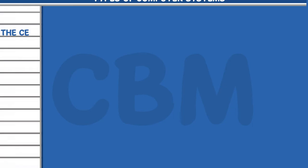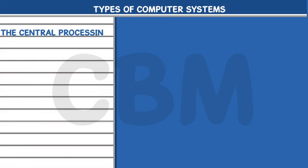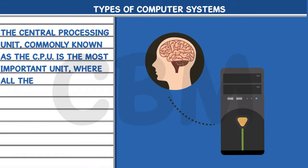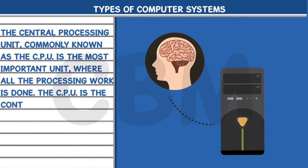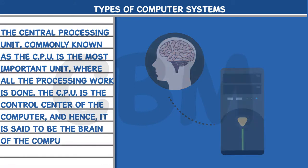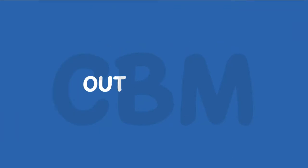Process Unit: The central processing unit, commonly known as the CPU, is the most important unit where all the processing work is done. The CPU is the control center of the computer, and hence it is said to be the brain of the computer.